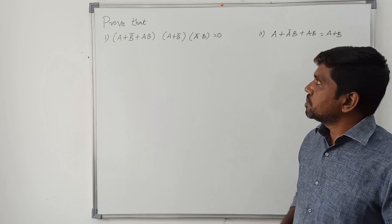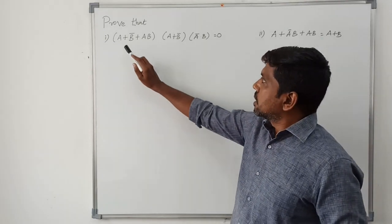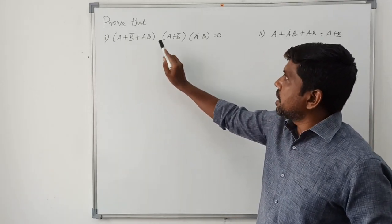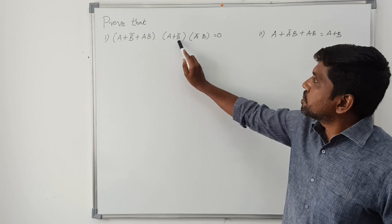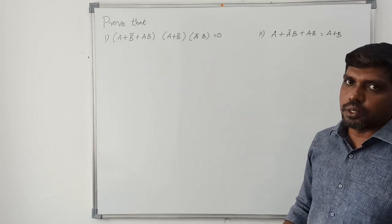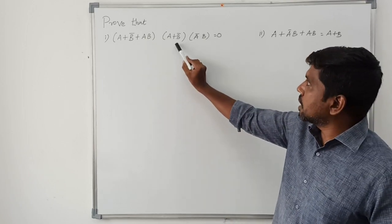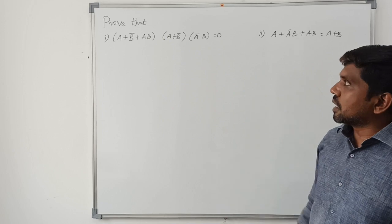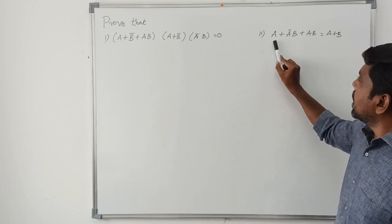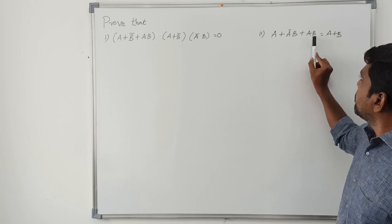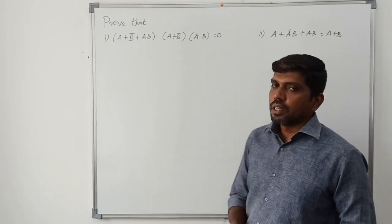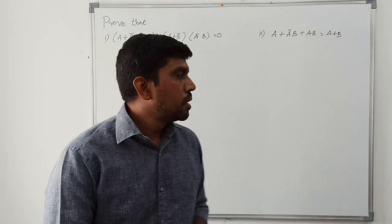So first, I will read the problems. Problem one: prove that (a + b̄ + ab)(a + b̄)(ā·b) = 0, meaning left hand side equals right hand side. Problem two: prove that a + āb + ab = a + b. We will solve them one by one.